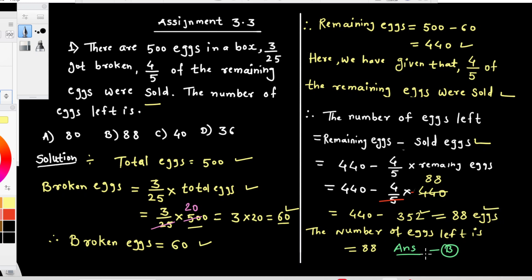The number of eggs left is 88. Answer: number B, 88.